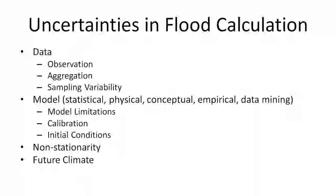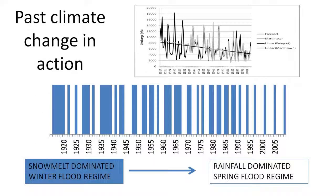This simplicity doesn't mean that the flood calculations are simple. They are very uncertain, and the uncertainties range from data uncertainties — observation, data aggregation, sampling variability — to the model. We use statistical models, but many other models as well. Models have limitations, they have calibrations that are subjective, and initial conditions are different. I'm particularly going to focus on two issues: one is the non-stationarity of the past data, and the other is the future climate.